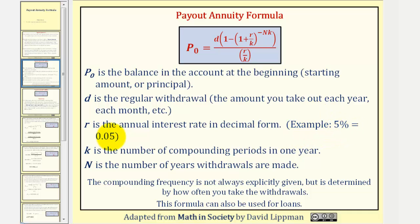For example, five percent would be 0.05. K is the number of compounding periods in one year. And N is the number of years withdrawals are made.